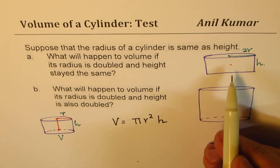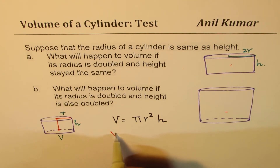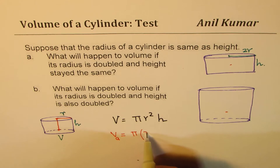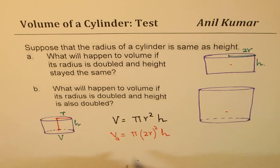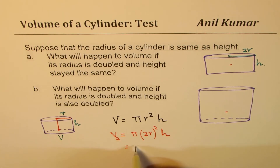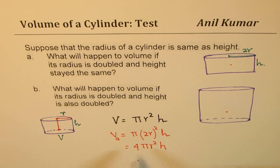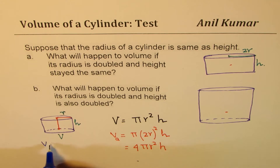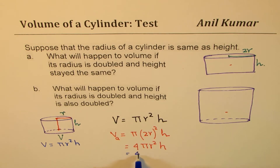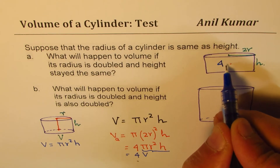So let's look into the first one, where the radius is twice. In that case, the volume of A will be pi times 2R whole squared times height, which will be — so 2 squared is 4, 2 times 2 becomes 4 — so we get 4 times pi R squared H. This volume V is pi R squared H. Clearly, it is 4 times V, because this pi R squared H is same as V. So that volume becomes 4 times the original volume.